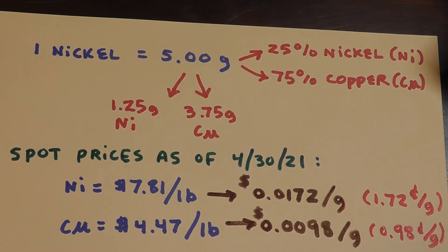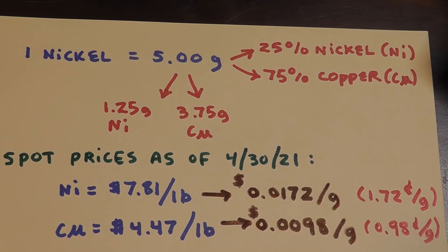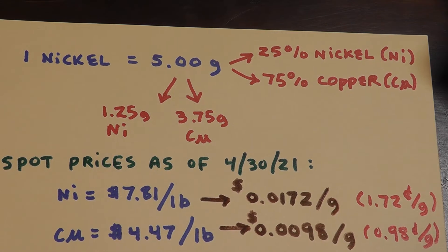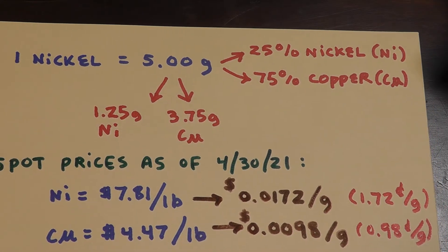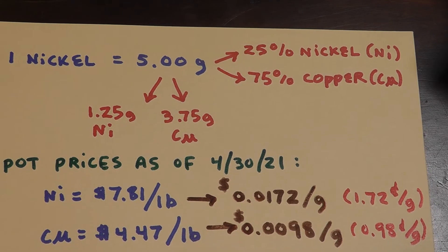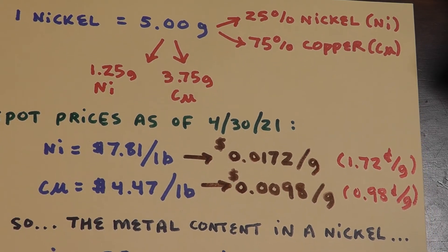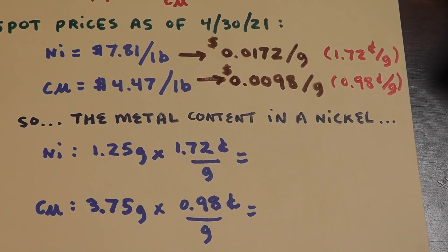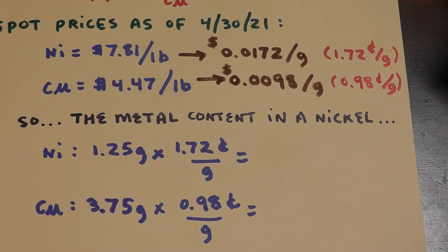Okay, so let's do some number crunching real quick, like a bunny. If we go and we say that seven dollars and 81 cents a pound is really 0.0172 dollars or 1.72 cents a gram, what's in a nickel in terms of its intrinsic value in terms of the metals? Well, let's go and calculate that out real quick.